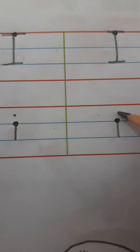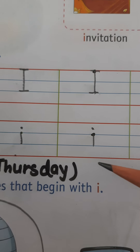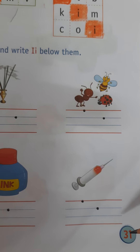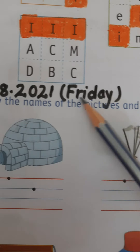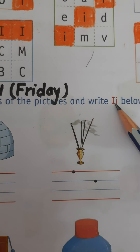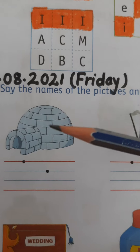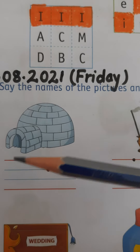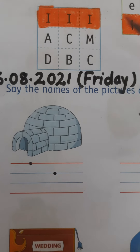Dear children, you have to trace and write capital I and small i like this. Now we have one more question which will be on your page number 31. The question is: say the names of the pictures and write capital I and small i below them. Yahaan pictures bani hain with the letter I. Kal ham ne picture reading ki thi — aaj ham phir ek baar revise karenge aur har picture ke neche capital I and small i likhenge. So let's recognize the pictures first — let's name them.